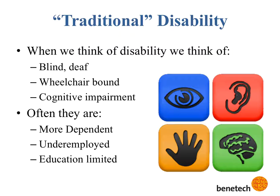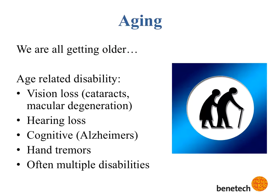When you think of disability, you probably think of the traditional disabilities like blindness, deafness, people who are wheelchair bound, or cognitive impairments. These people are often more dependent — either unemployed or underemployed — and often have very limited educational opportunities. But there are also things you should consider, like aging. We're all getting older. Aging-related disabilities include vision loss, hearing loss, things like Alzheimer's, hand tremors, and often multiple disabilities.